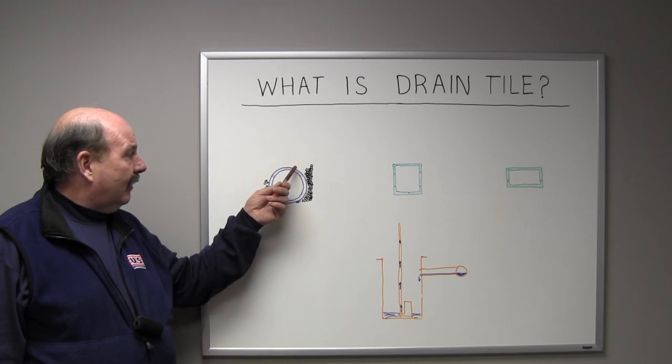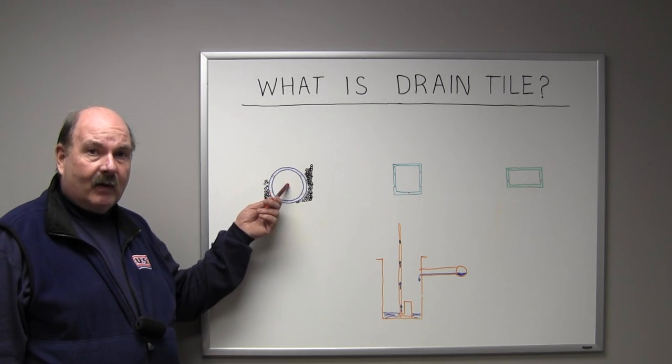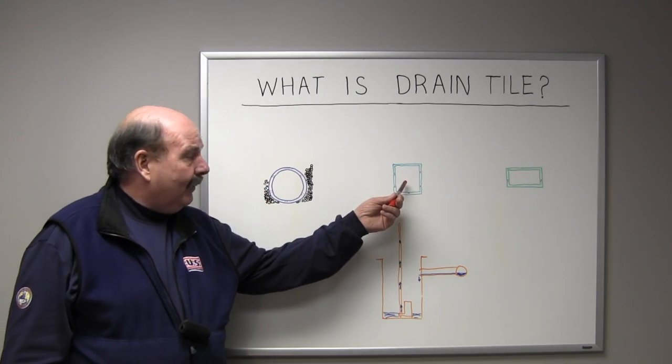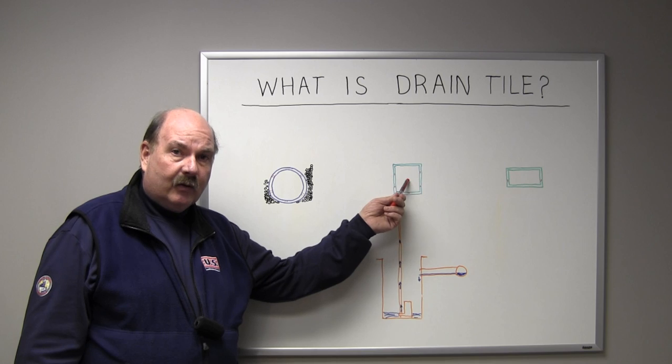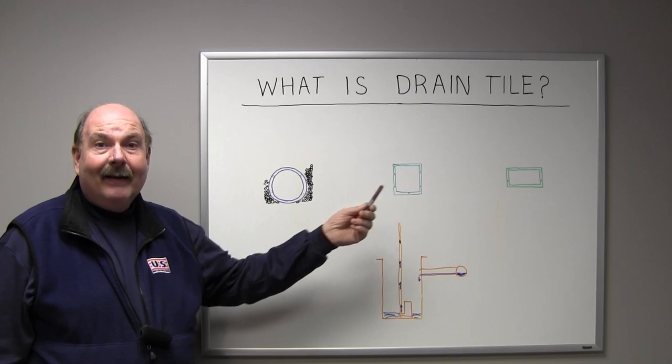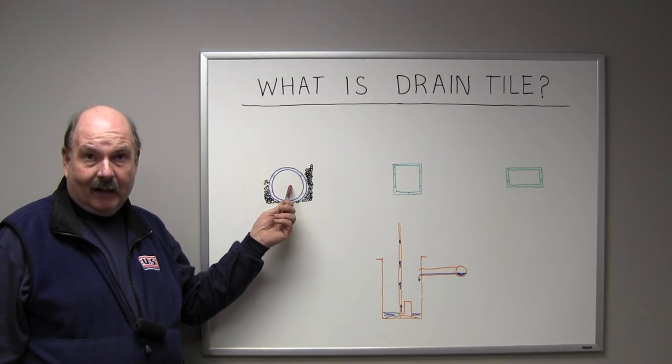In this particular case, round drain tile was the first and still the best. There are companies in our industry that try to be unique and change the shape to either square or rectangular, trying to tell you that it's better. To be honest, it's not. No one's beaten the round pipe yet.